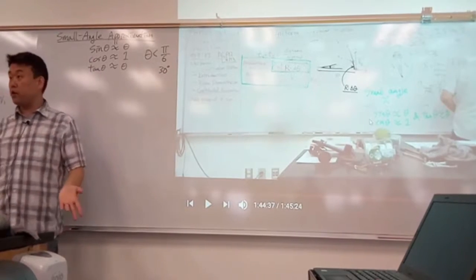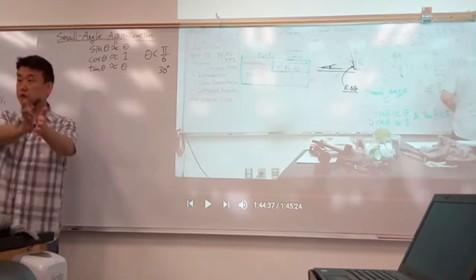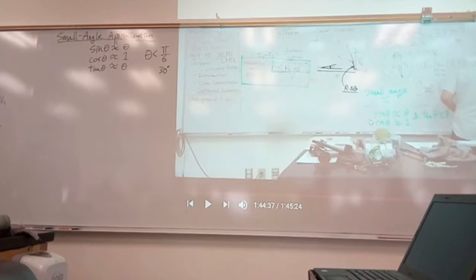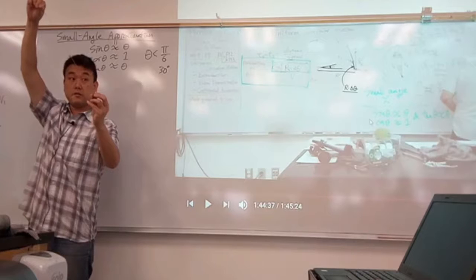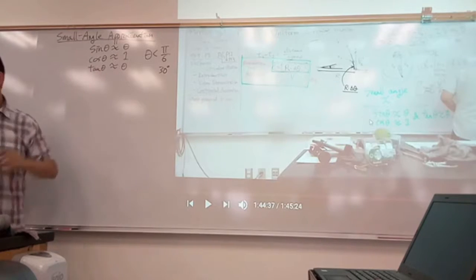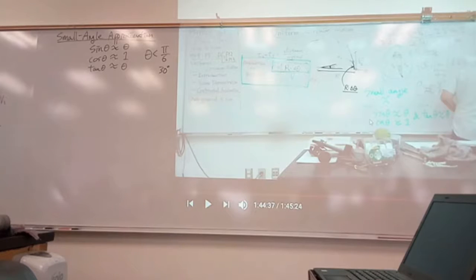So we call it small angle approximation, but we don't mean super small like 1 degree. Something can be as large as 30 degrees. A 30 degree angle is from the vertical, this is about 30 degrees. So it looks like a substantial angle, but this formula will be roughly valid. Let me demonstrate it with WolframAlpha, actually, because I have that capability now.